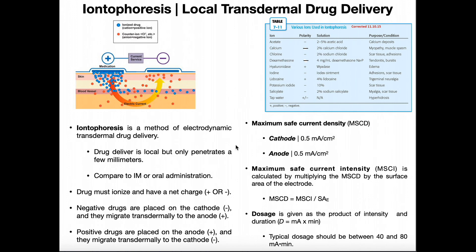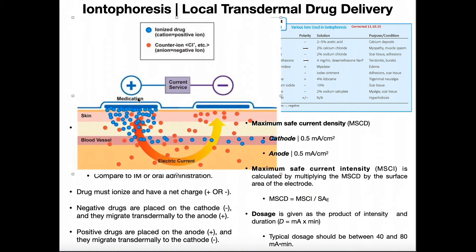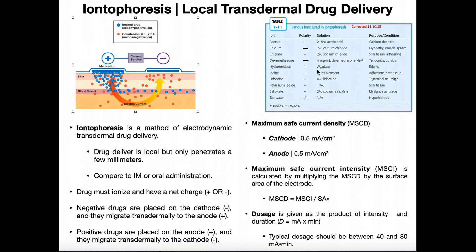An important point before looking at setup parameters: whatever electrode you put the drug on, that electrode becomes the active electrode. In this example, since the drug was positively charged it was placed on the anode, so the anode is the active electrode and by default the other one is the dispersive electrode. However, if we were dealing with dexamethasone — which has a negative charge — we would put it on the cathode, and then the cathode would become the active electrode, while the anode would be the dispersive electrode.